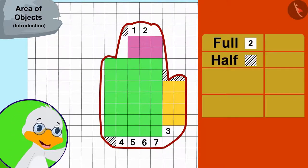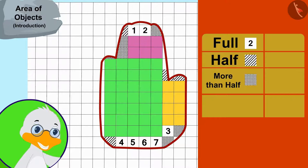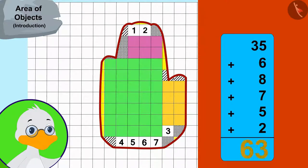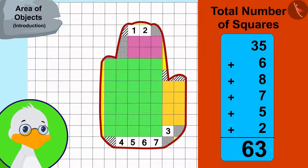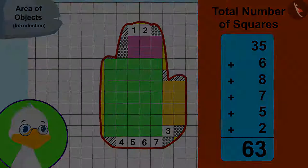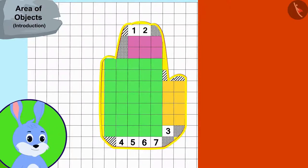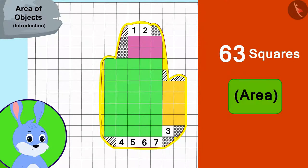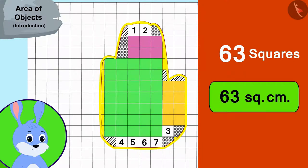Now in the end, I will count the number of remaining full, half, and more than half squares, thought uncle. Uncle also found these numbers in this way. Now uncle added all these numbers to find the total number of squares. In this way, there are a total of 63 squares in the bunny's hand impression. In other words, the area of bunny's hand impression is 63 square centimeters.